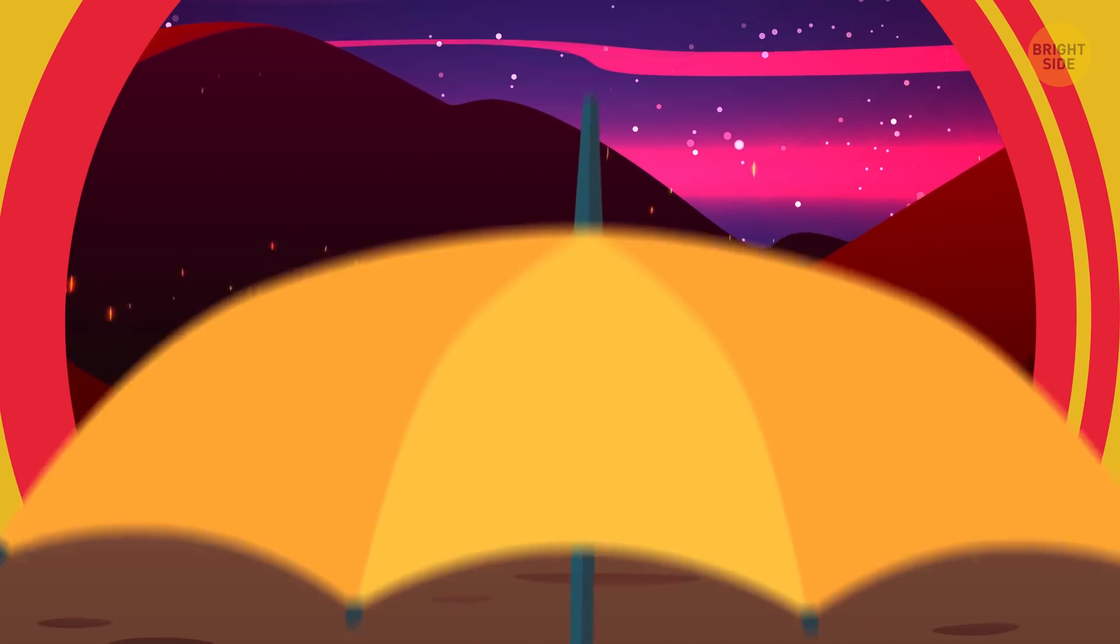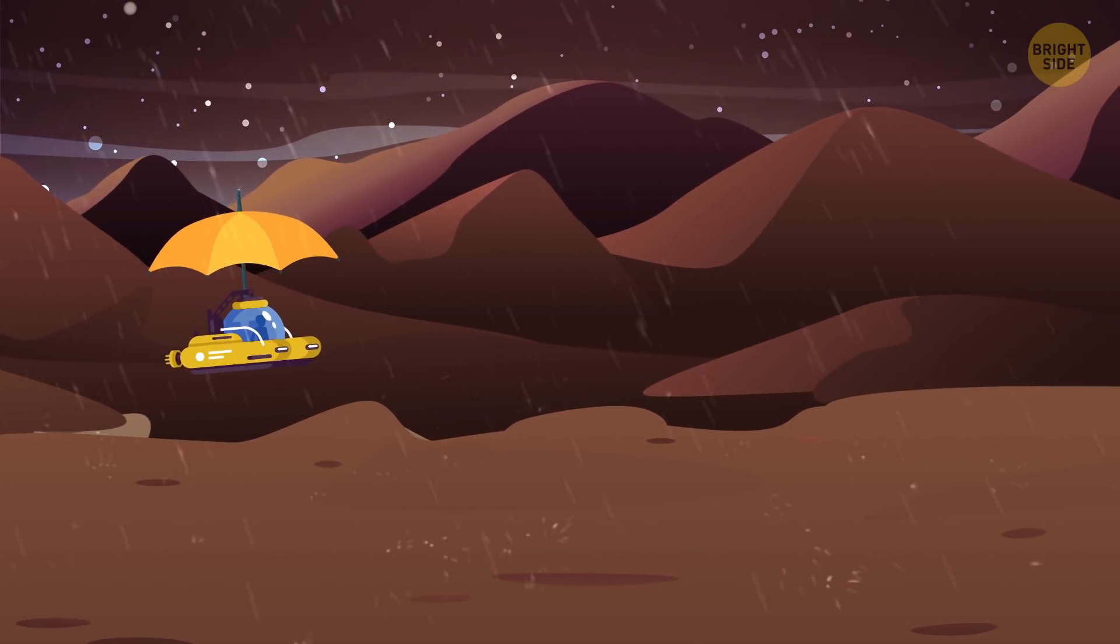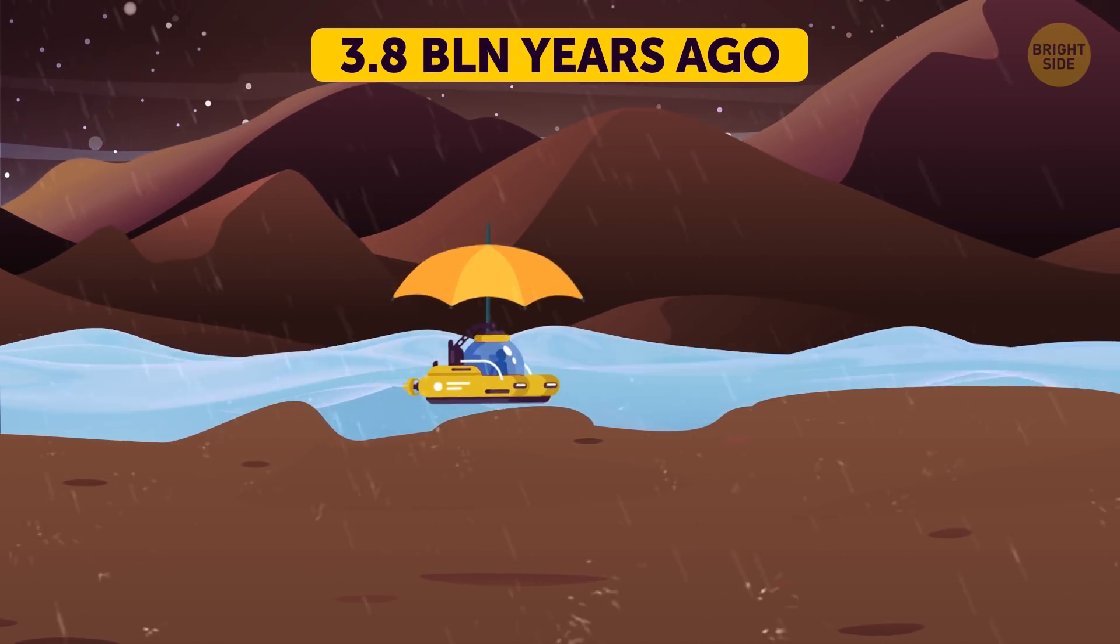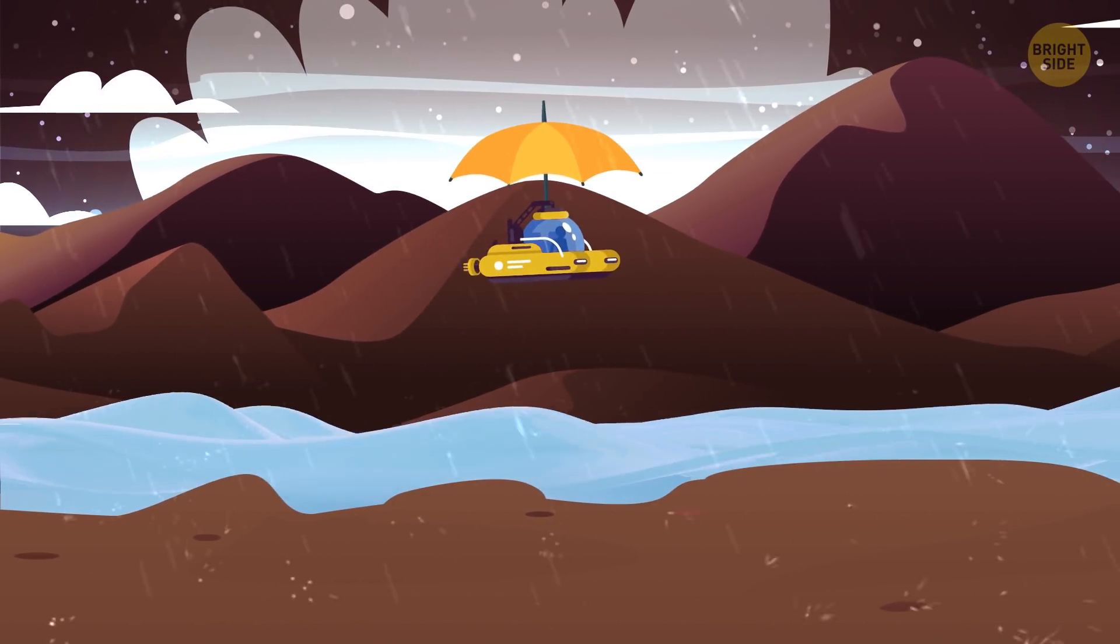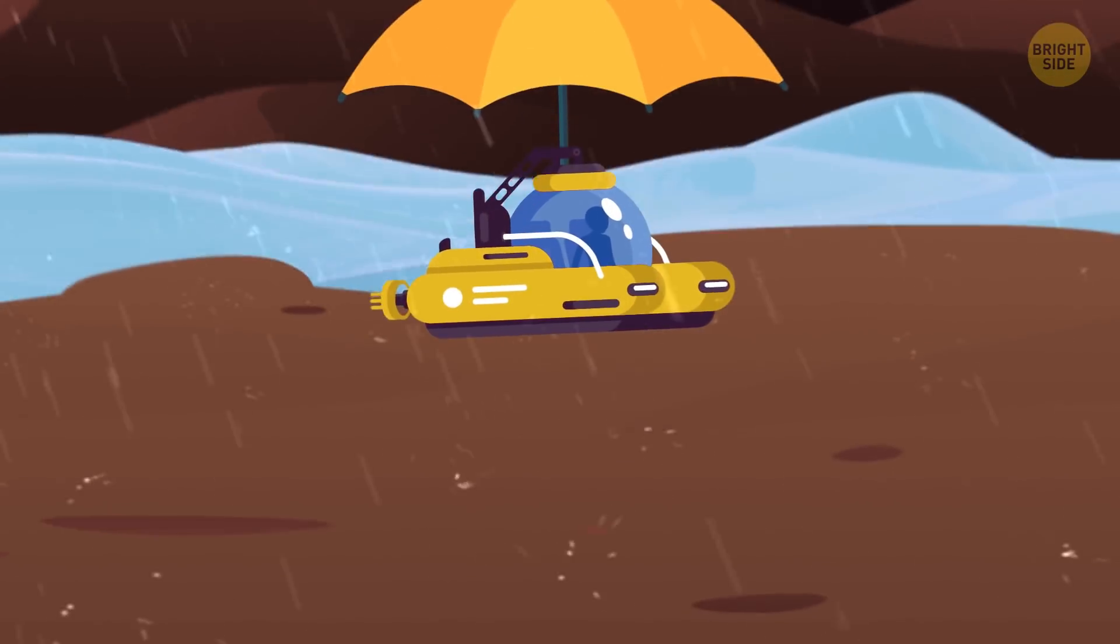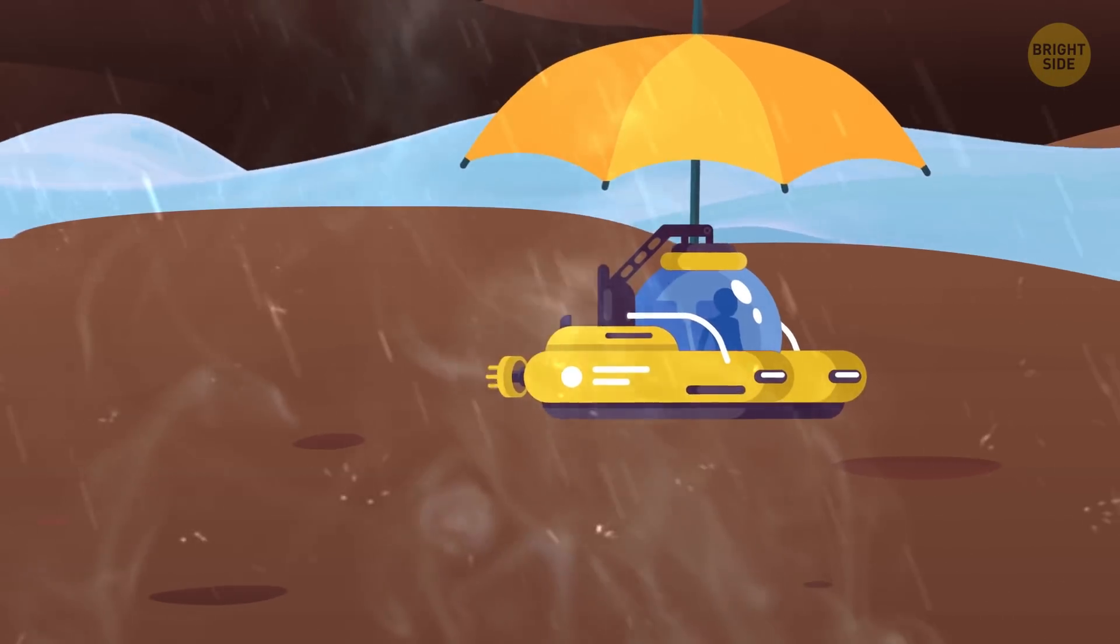No wonder I see no wildlife whatsoever. Does anyone have an umbrella I could borrow? I feel like all this rain would be enough to fill an ocean. Oh yeah, it did just that 3.8 billion years ago. The rain came from those clouds over there, the first ones in the history of Earth. They formed because the planet eventually began to cool down, allowing water to go from a gas to a liquid state.